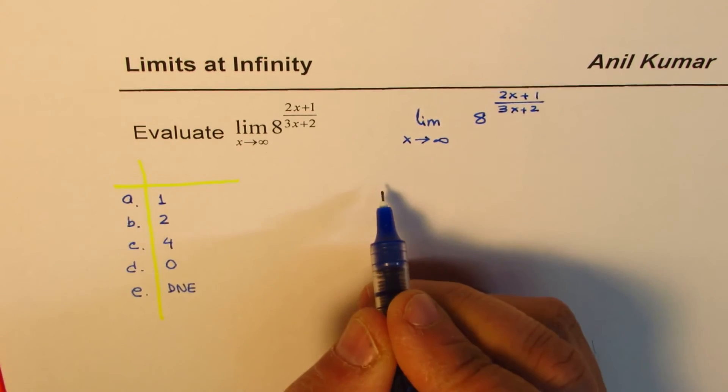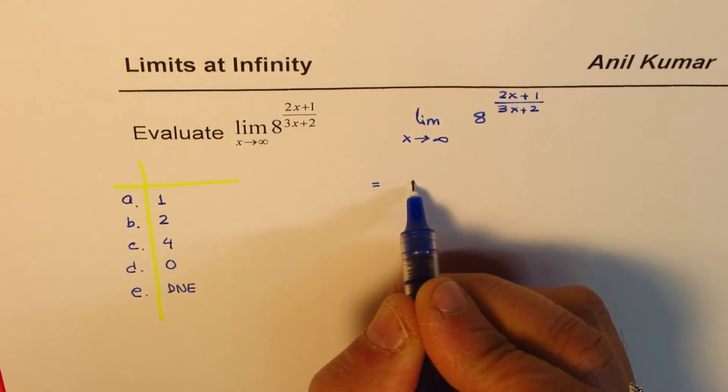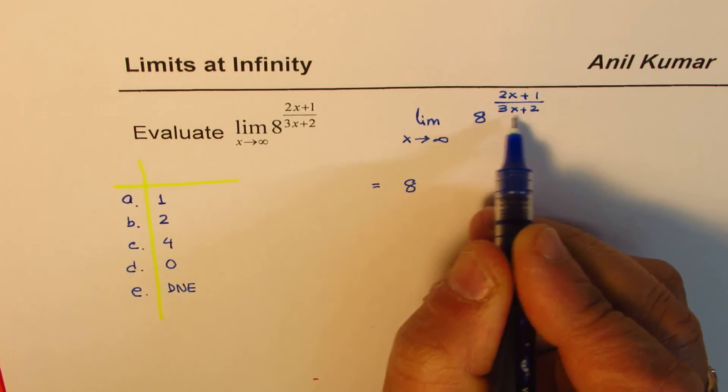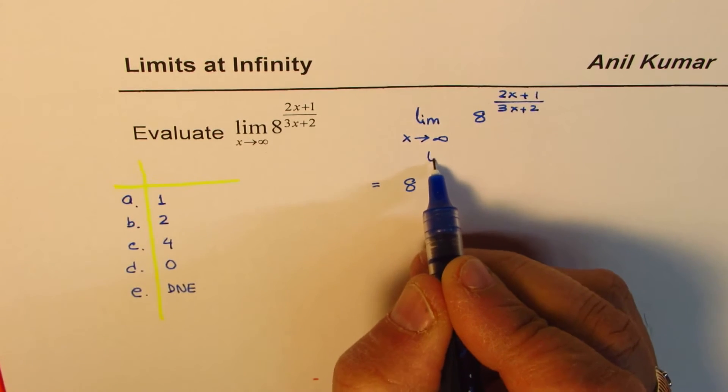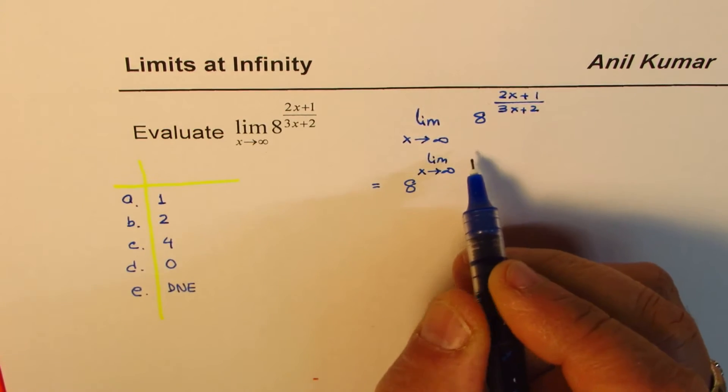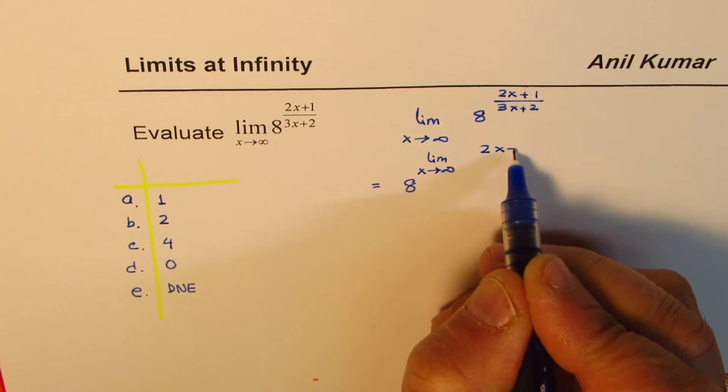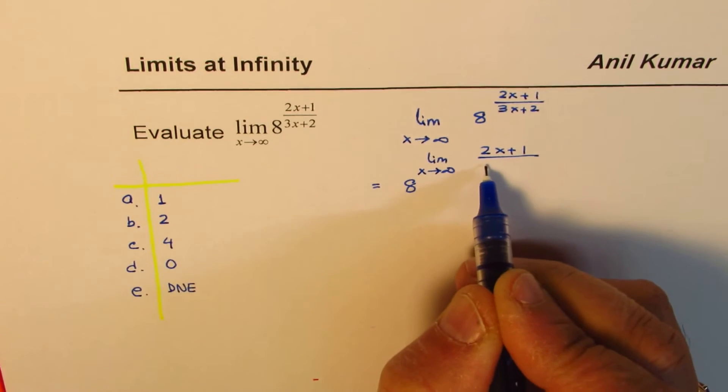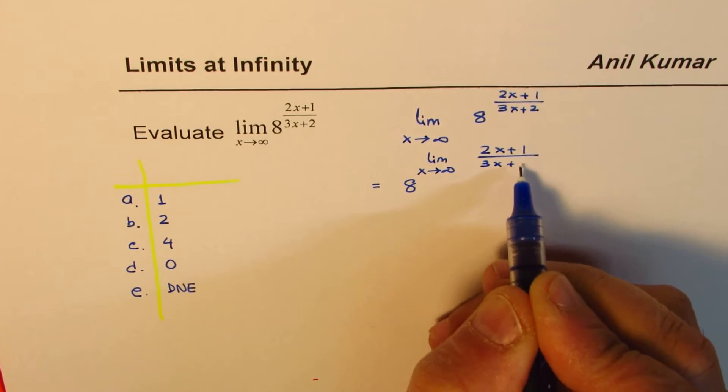So we could actually write this as 8 and we can take the limit of the exponents. So we could write limit x approaches infinity for (2x+1) divided by (3x+2).